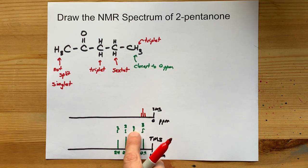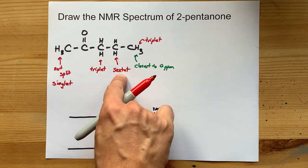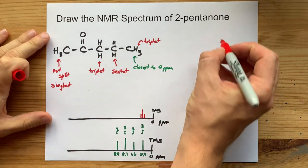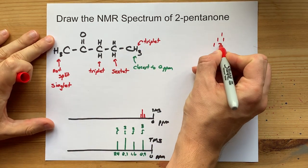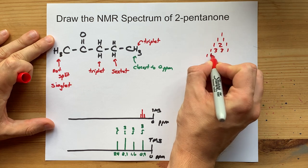Next, we have these two. Those were adjacent to five other hydrogens, which makes them a sextet. Now, I actually forget what the arrangement for a sextet is. So I have to go to my old Pascal's triangle and work it out.